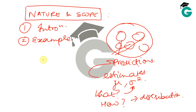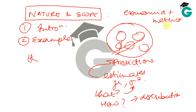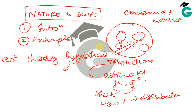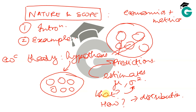In econometrics you go about this in a slightly different way. You still have a population and still want to answer those questions, but the population is defined because you have something you'd like to test. There is an economic theory — and as the word suggests, econometrics is the measurement of economics. That theory gives you a hypothesis, and based on that hypothesis you define your population, take samples, get data, assume a distribution, develop a model, and test your hypothesis.